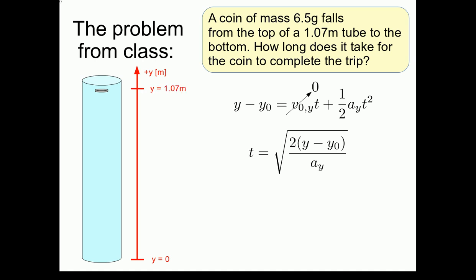And therefore, the initial position of the coin at the top of the tube would be at y equals 1.07 meters. Translating this into our variables for our time expression, we have that the initial position of the coin, which is represented by y not, was equal to 1.07 meters. And the final position of the coin would therefore be 0 meters, the bottom of the tube.